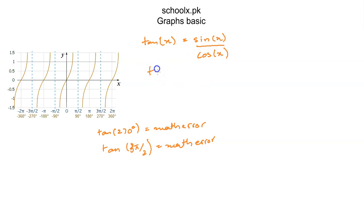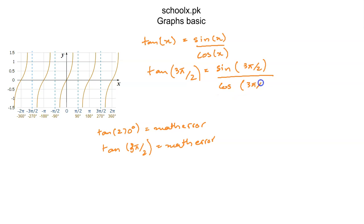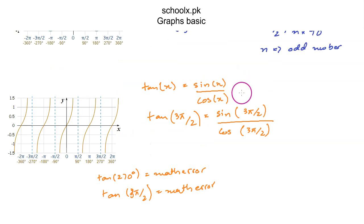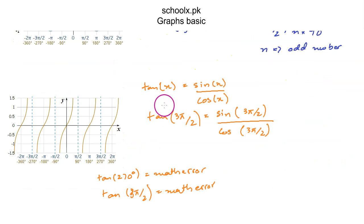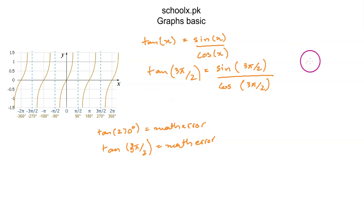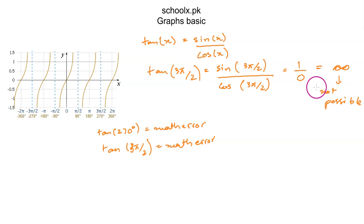So to find tan of 3π/2 or tan 270 degrees, it gives sin(3π/2) over cos(3π/2). Now sin(3π/2) is negative 1, and cos(3π/2) is 0. Anything divided by 0 is infinity, or you can say it is not possible — there is no value. Hence that is why the calculator gives you a math error.